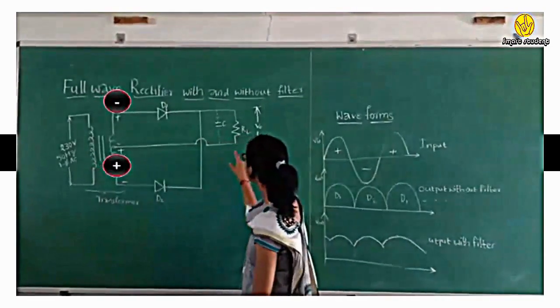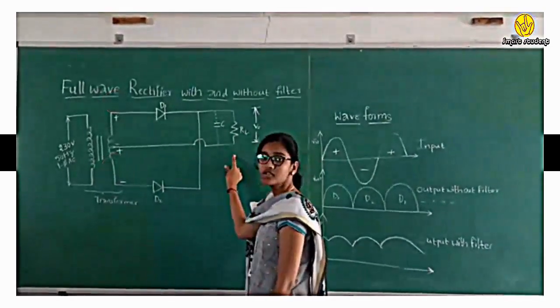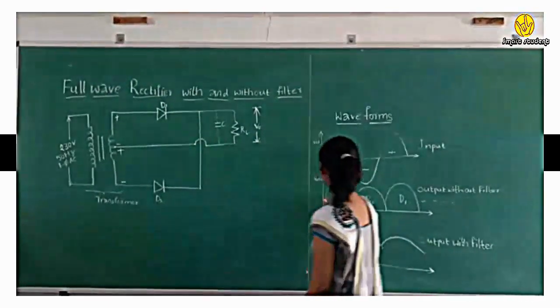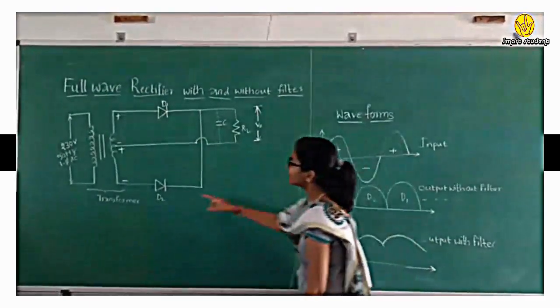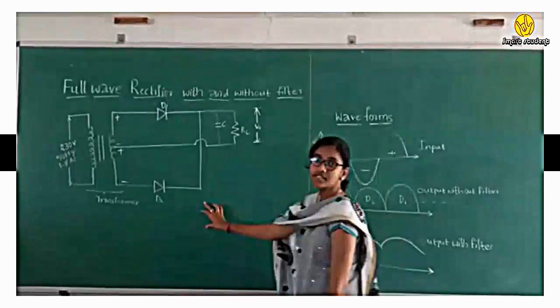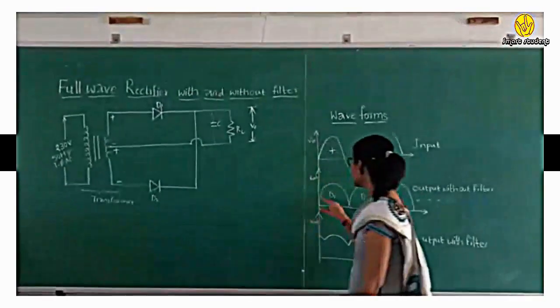During the positive half cycle we get a positive peak, and during the negative half cycle also we get a positive peak due to D2 conducting. This is the output waveform when the two diodes are conducted.